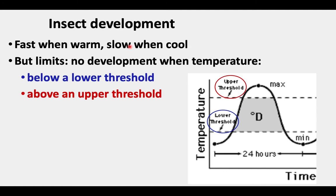Insect development is fast when it's warm and slow when it's cool, but you need to realize there are limits to this. There is no development if it's either too cold or too hot — no development below a lower threshold temperature or above an upper threshold temperature. This is illustrated in a graph showing the temperature over time in a typical 24-hour day. It starts out at lower temperatures early in the morning, rises during the day, reaches some maximum in midday, and then starts to fall as you approach nighttime. Below the lower threshold, insects do not develop.